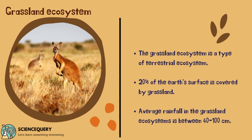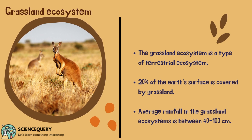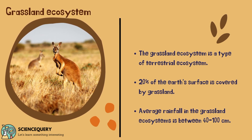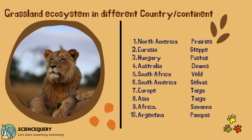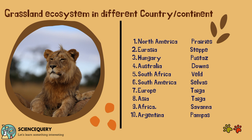A grassland ecosystem is a type of terrestrial ecosystem — this type of ecosystem thrives only on land, not in water. 20% of the earth's surface is covered by grassland. Average rainfall in the grassland ecosystem is between 40–100 cm. Different countries and continents have different types of ecosystem and thus it has different names in different places: in North America it is known as prairies, in South Africa it is called veld, whereas the grasslands of Europe and Asia are known as taiga.